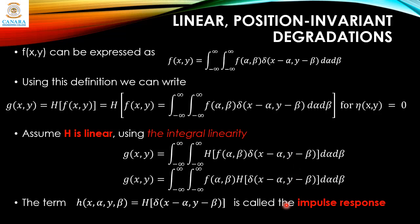When η(x,y) = 0, h(x,α,y,β) is the response of h to an impulse of strength one at coordinates (x,y). In optics, the impulse becomes a point of light, and h(x,α,y,β) is commonly referred to as the point spread function (PSF). This name arises from the fact that all physical optical systems blur a point to some degree, with the amount of blurring determined by the quality of the optical components.